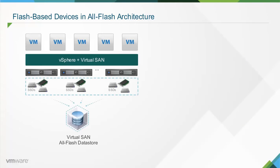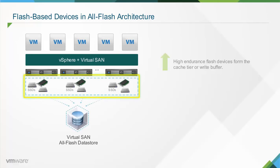In Virtual SAN all-flash architecture, read and write operations go directly to flash devices. High-endurance flash devices listed in the VCG form the cache tier or write buffer. Low-endurance flash devices listed in the VCG form the capacity tier. The choice of hardware is the important performance differentiator between Virtual SAN configurations.